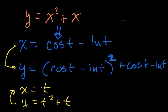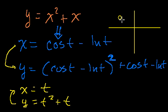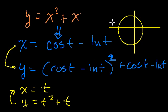These two parametric forms will have the same shape — something like a parabola — but the rate and direction with which they progress along that path will be very different. You could even set up parametric equations that oscillate back and forth along the path rather than going consistently in one direction. The difference between the various parametric forms is not the shape, but how you move along that shape.